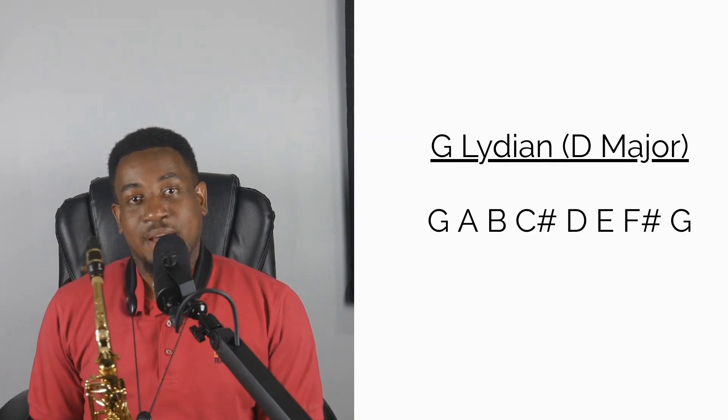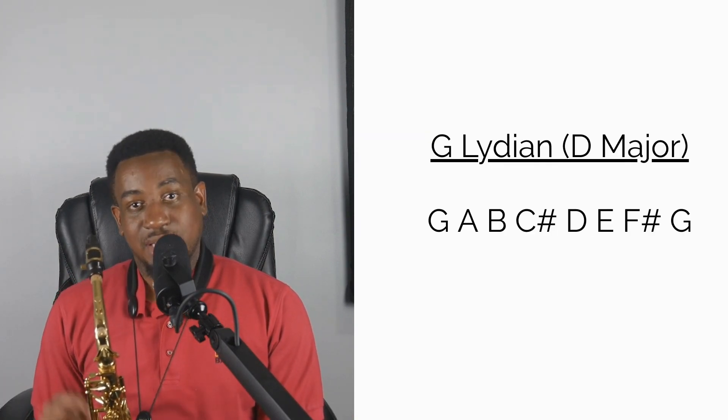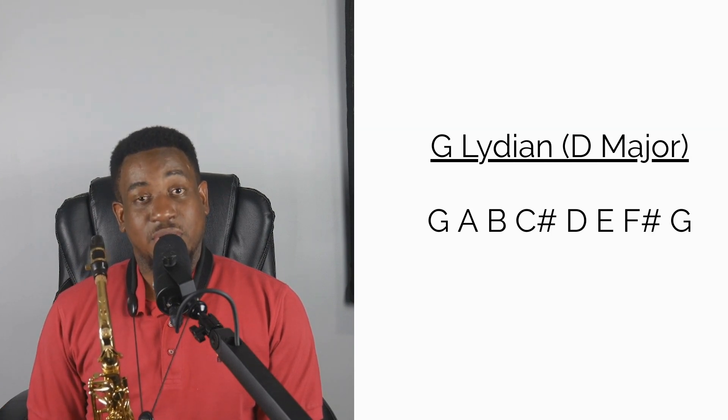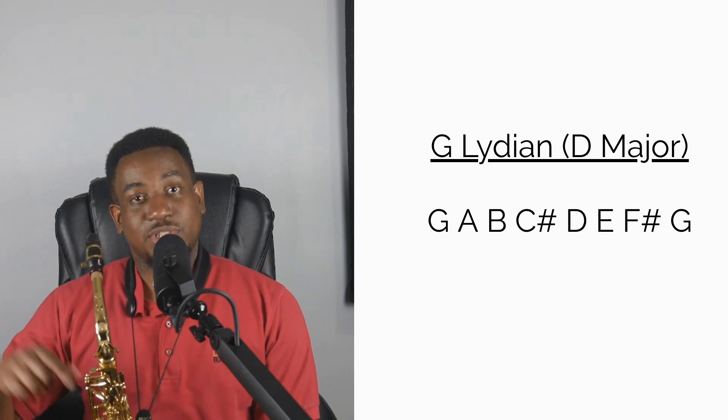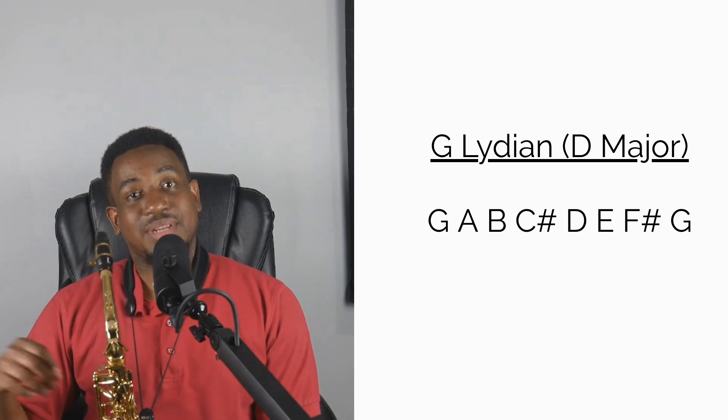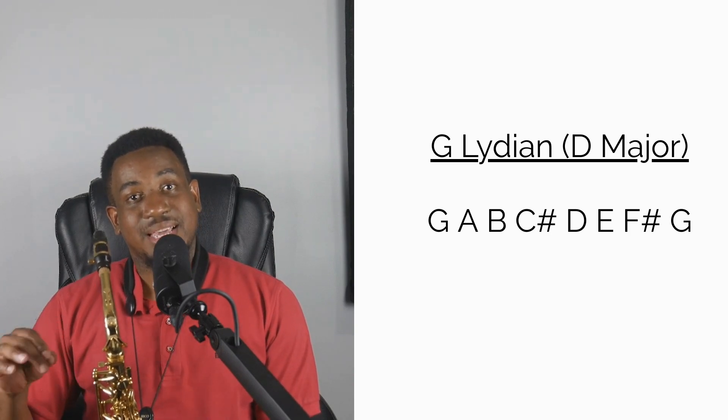Then we have G Lydian. Lydian is the fourth mode, so G is the fourth scale degree of D. You basically play your D major scale starting from G, so you get G A B C# D E F# G.